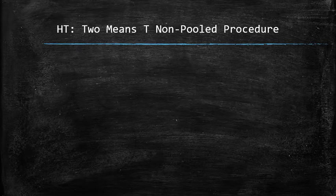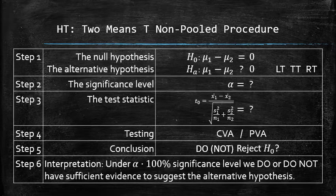We will use the following template to perform the hypothesis testing. In step 1, we will set up the hypothesis. In step 2, we will identify the significance level. In step 3, we will find the test statistic using the formula. In step 4, we will perform either the critical value approach or p-value approach to test the claim. In step 5, we will draw the conclusion. And finally, in step 6, we will interpret the results.